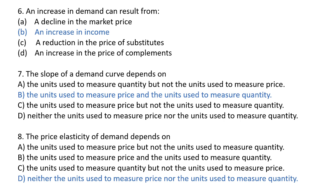Next question: an increase in demand can result from? When demand is rising in the market, this basically happens when the consumer's income is increasing. As consumer income rises, they increase their demand and try to buy new goods. So an increase in demand can result from an increase in income. The answer will be B.